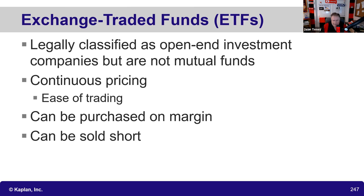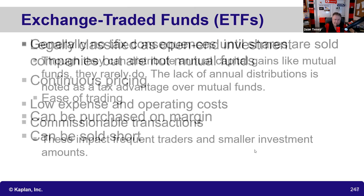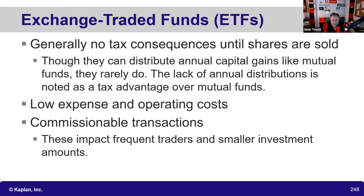ETFs are legally classed as open-end investment companies, but that's not the test point. Unlike open-end mutual funds, ETFs are continually priced and trade like a stock. They can be purchased on margin, and all short sales must be conducted in a margin account — ETFs can be sold short. ETFs are generally more tax-efficient because, unlike a mutual fund, they rarely trade securities. It's passive management: assets are professionally selected, dumped into the ETF, and then it trades like a stock, generating fewer taxable distributions and lower expense ratios.